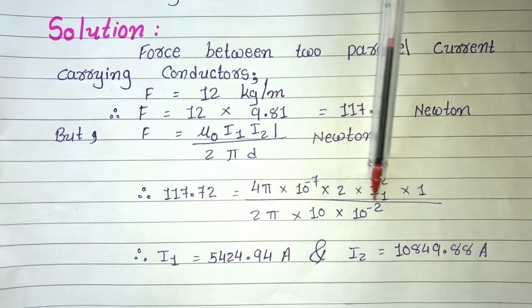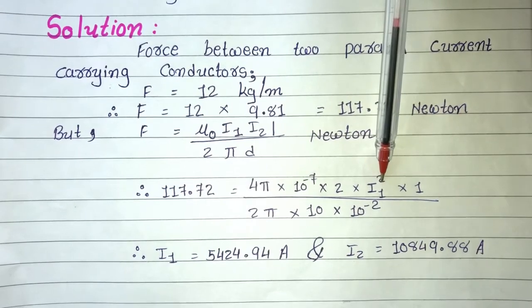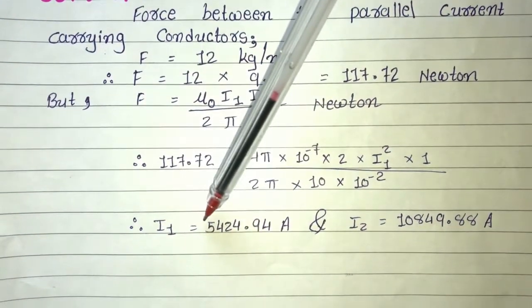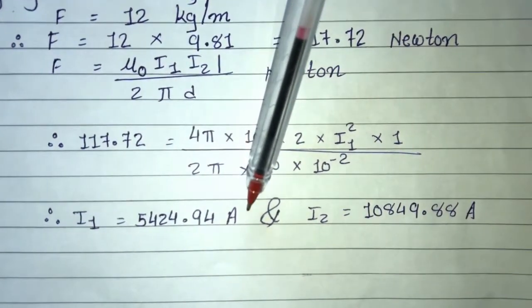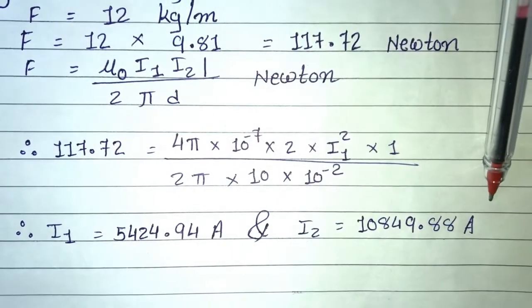So, when you solve this, I1 will go in which form? It will go in equation form. That means you have to find this out. So, when you solve this, what answer will you get? I1 is equal to 5424.94 ampere and I2 is equal to 10849.88 ampere.